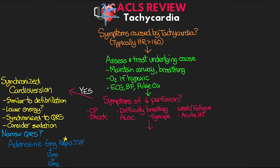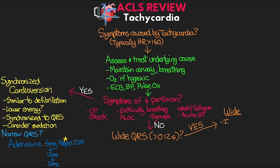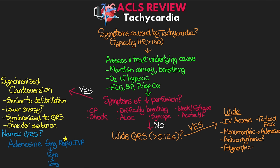If we've done that assessment and our patient is not unstable, then we want to assess whether they have a wide or narrow QRS, determined by whether the QRS complex is greater than 0.12 seconds. If they do have a wide QRS, we want to ensure that we have IV access and get a 12-lead ECG. In this situation, we can consider using adenosine again if it's regular and monomorphic. We also want to consider antiarrhythmic medications such as amiodarone, procainamide, or sotalol. If our patient is in polymorphic VTAC, we also want to consider the use of 1 to 2 grams of magnesium. At this point, we do want to consider expert consultation with a cardiologist.